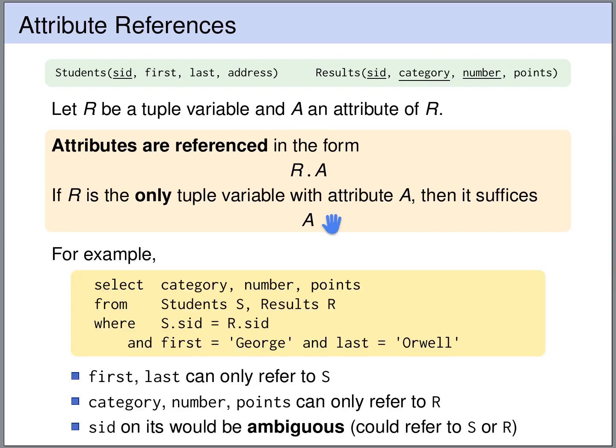Let's have a look. In this example, we have a query that accesses two tables, students and results. We call the tuple variable that iterates over the rows in students S, and we call the tuple variable that iterates over the results table R. In the select clause, we write category, number, and points without explicitly writing R.category, R.number, R.points.